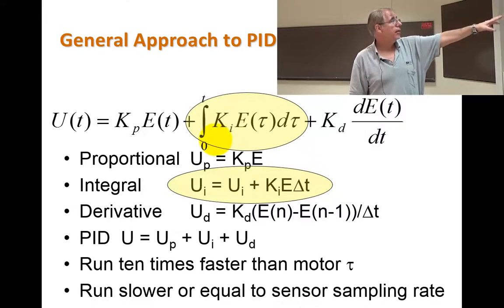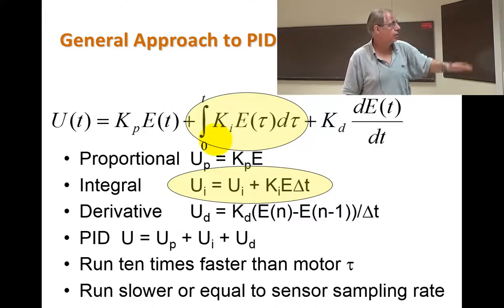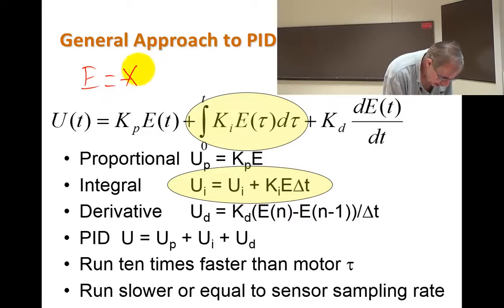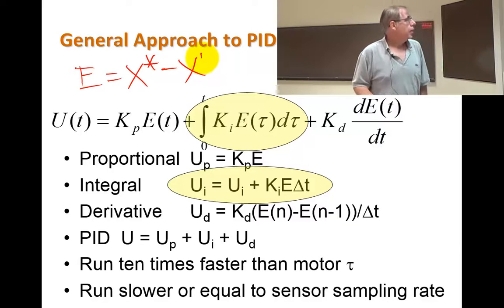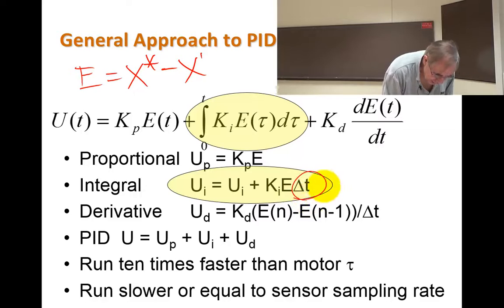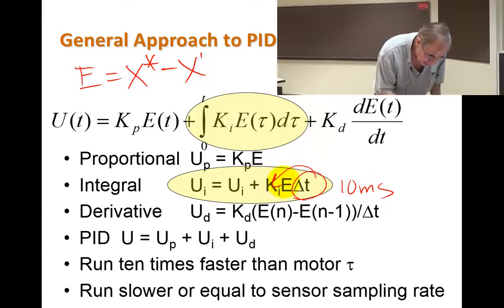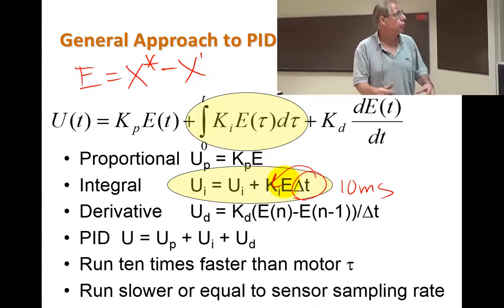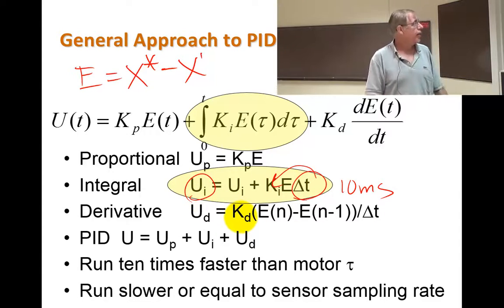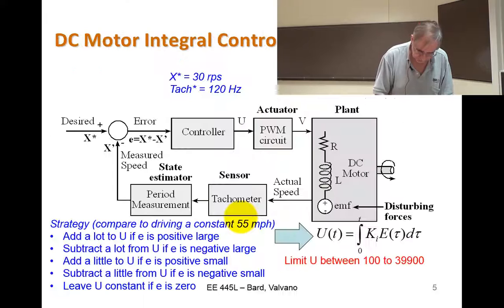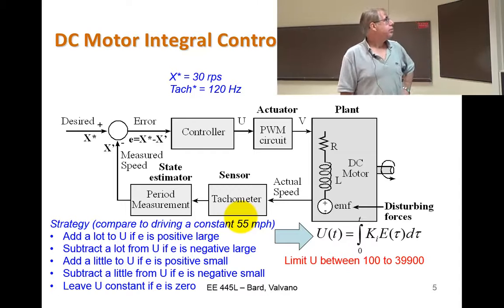And so we're going to implement an equation that takes the error, the error, which is the desired speed minus the measured speed. And then since we're running at 10 milliseconds, that's a constant. So I'm actually going to incorporate those two coefficients into one coefficient. And again, this is my duty cycle here. And the important thing is to make sure it doesn't over and under flow.